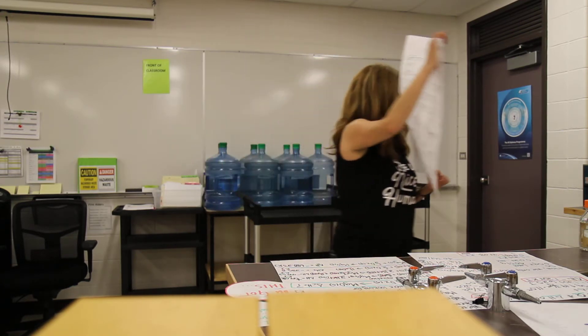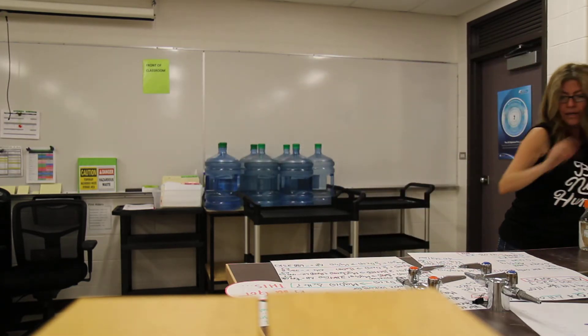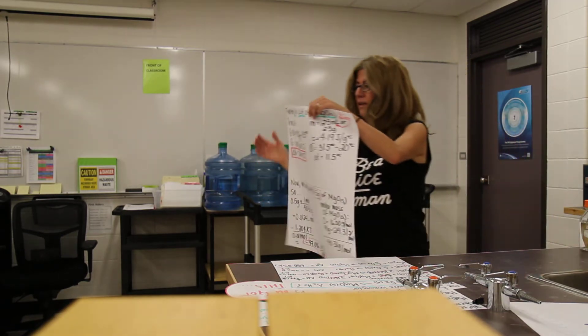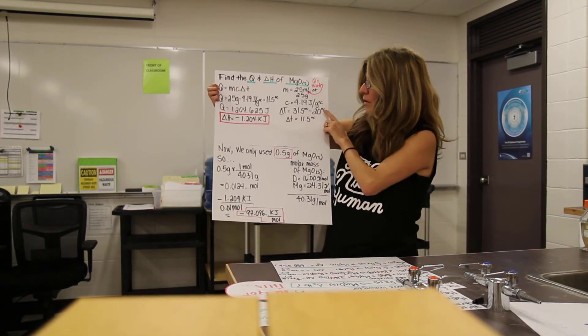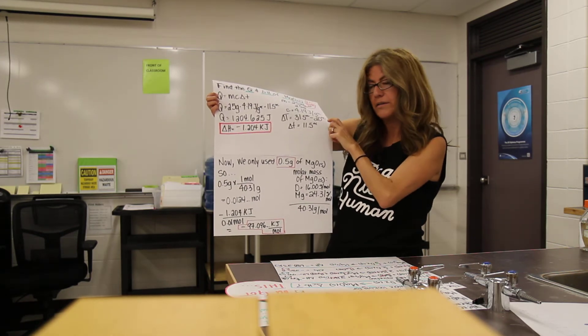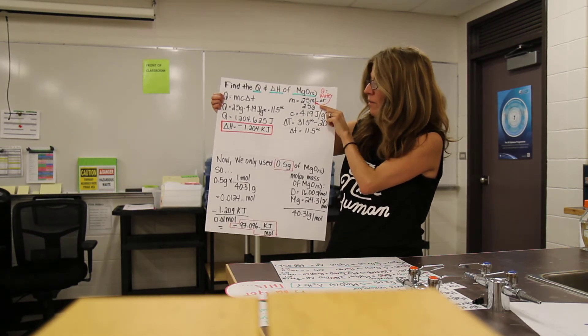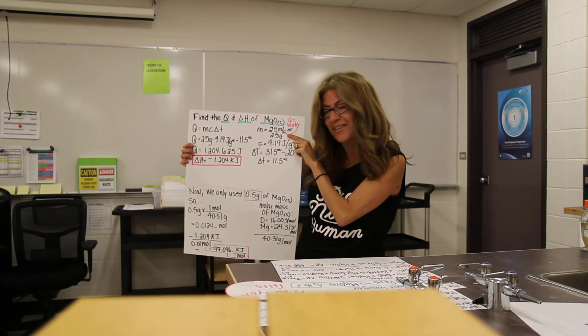So we're going to do the same thing, but this time we're looking for the Q and the delta H of the magnesium oxide. So of course, because we're looking at Q, we're using the information for the water, the surroundings. We use 25 milliliters of the water, so that's going to change to 25 grams of water.